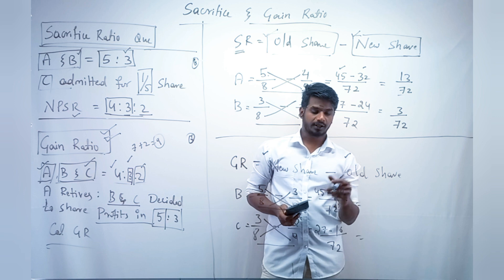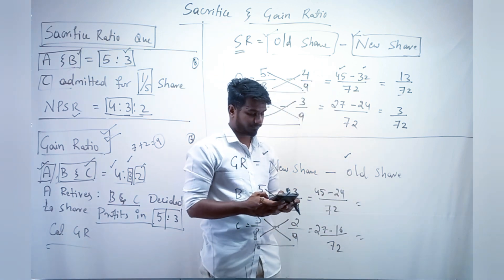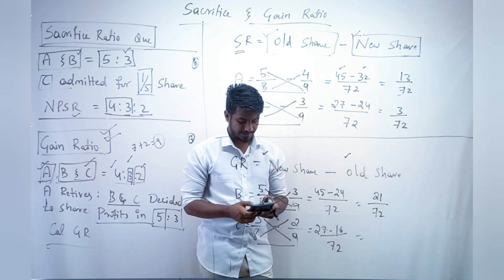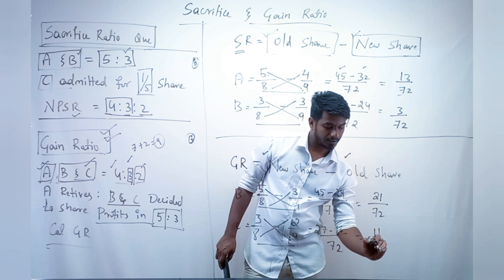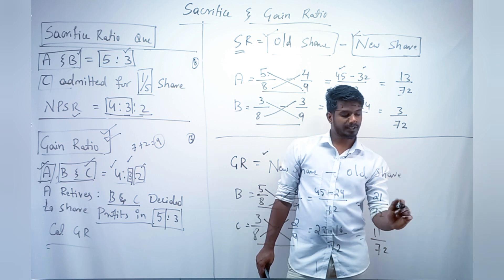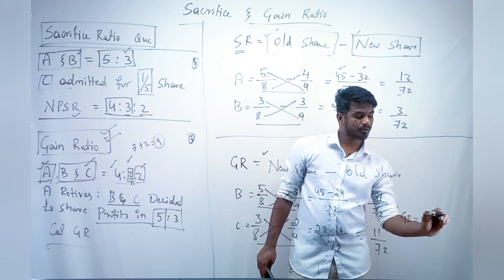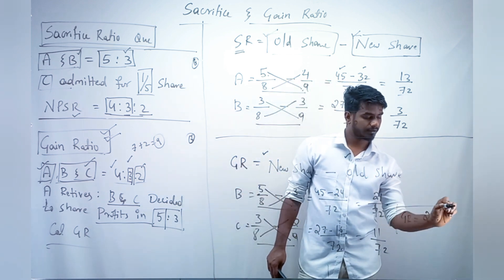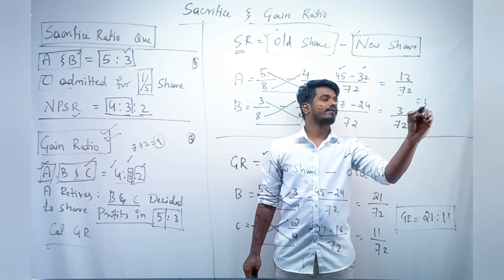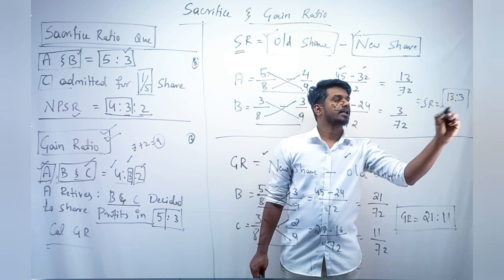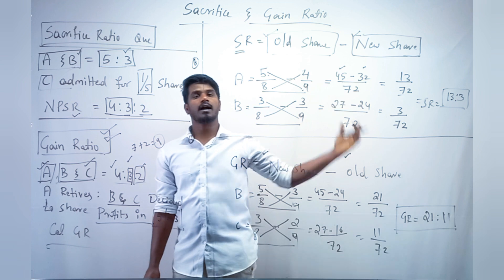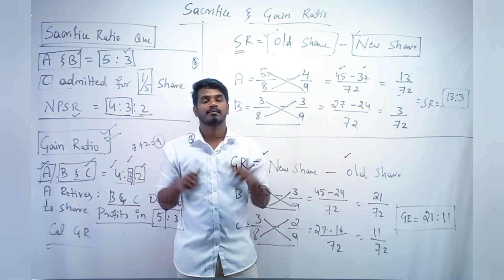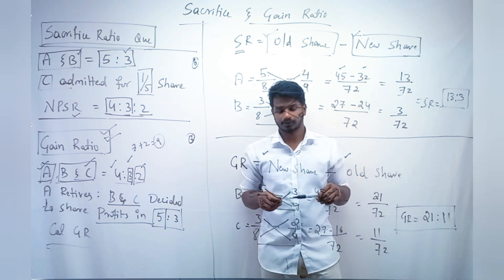So 45 minus 24 equals 21, giving 21/72 for B. And 27 minus 16 equals 11, giving 11/72 for C. The gain ratio is 21:11. The sacrifice ratio was 13:3. We are done with sacrifice and gain ratio. If you like the video, please subscribe, press the bell icon, and we'll meet in the next video.